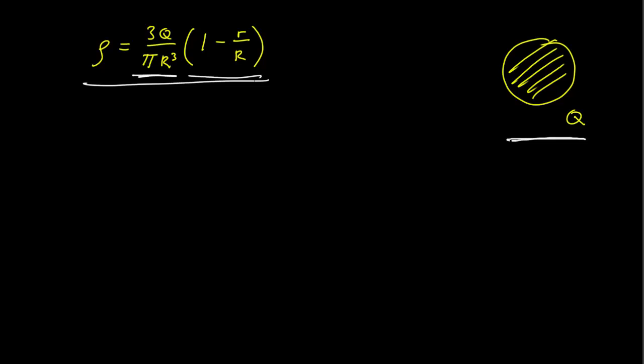To find the electric field everywhere, we have to break this up into two parts. The first part is going to be for the distance from the center greater than capital R. So we're going to utilize Gauss's law, and to do Gauss's law, we need the electric field dotted into the area element.